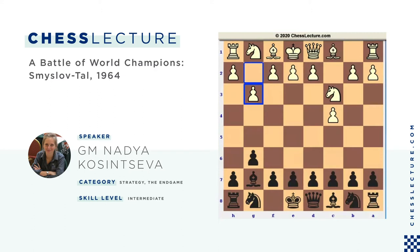White brings his light-square bishop to the long diagonal to better control the center and press on the b7 pawn. Tal proceeded with c5, which blocks the white c-pawn, allows black to expand on the queenside, and gives black control over the center — specifically over the d4 square. The pawn structure becomes pretty symmetric.